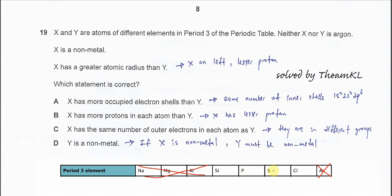X has a greater atomic radius than Y. We need to know that across the period, atomic size decreases because of constant shielding effect and increasing proton number, so size becomes smaller. Since X has a greater atomic radius than Y, X will be on the left of Period 3 and must have lesser protons.